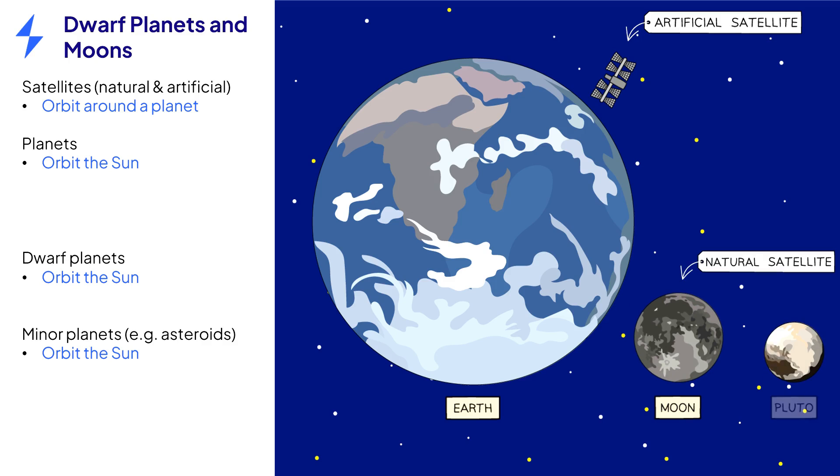Planets and dwarf planets are similar, as they are both large enough to become spherical. Whereas minor planets, such as asteroids, are not.